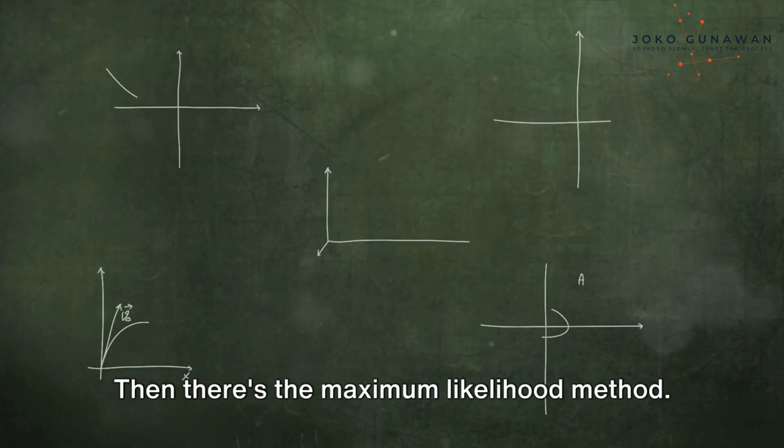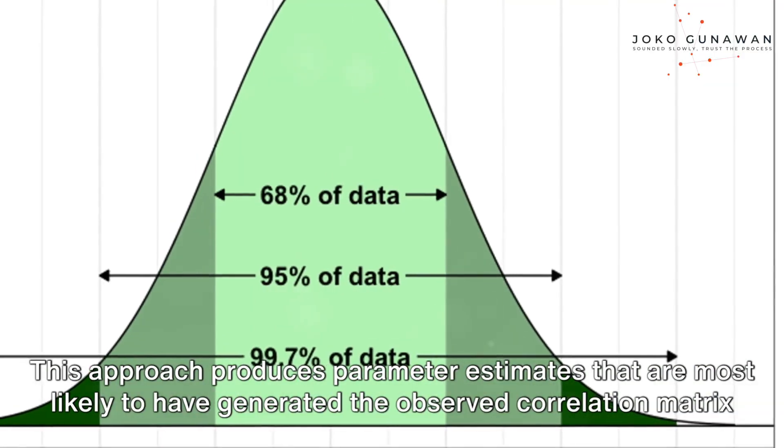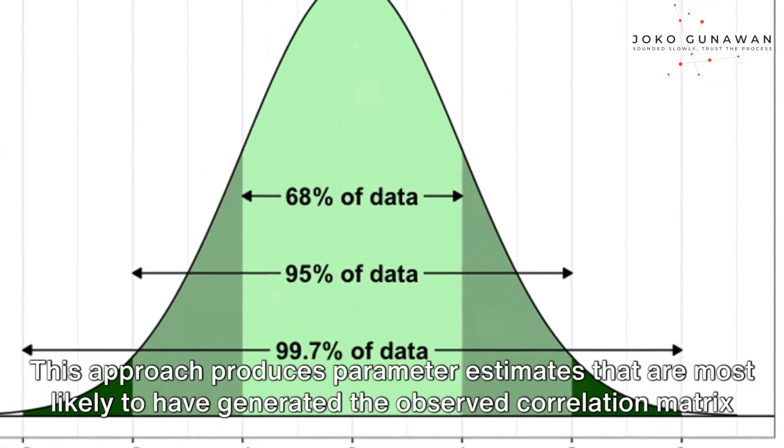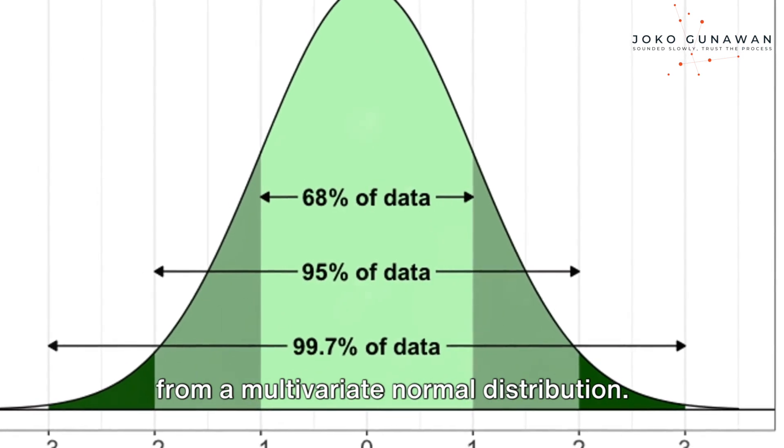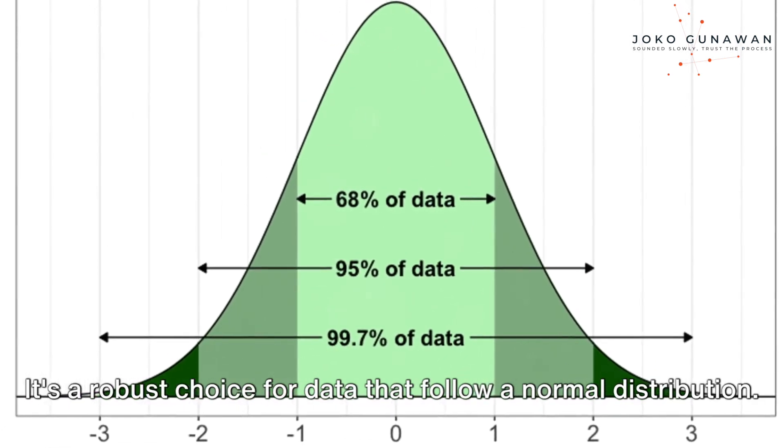Then there's the maximum likelihood method. This approach produces parameter estimates that are most likely to have generated the observed correlation matrix from a multivariate normal distribution. It's a robust choice for data that follow a normal distribution.